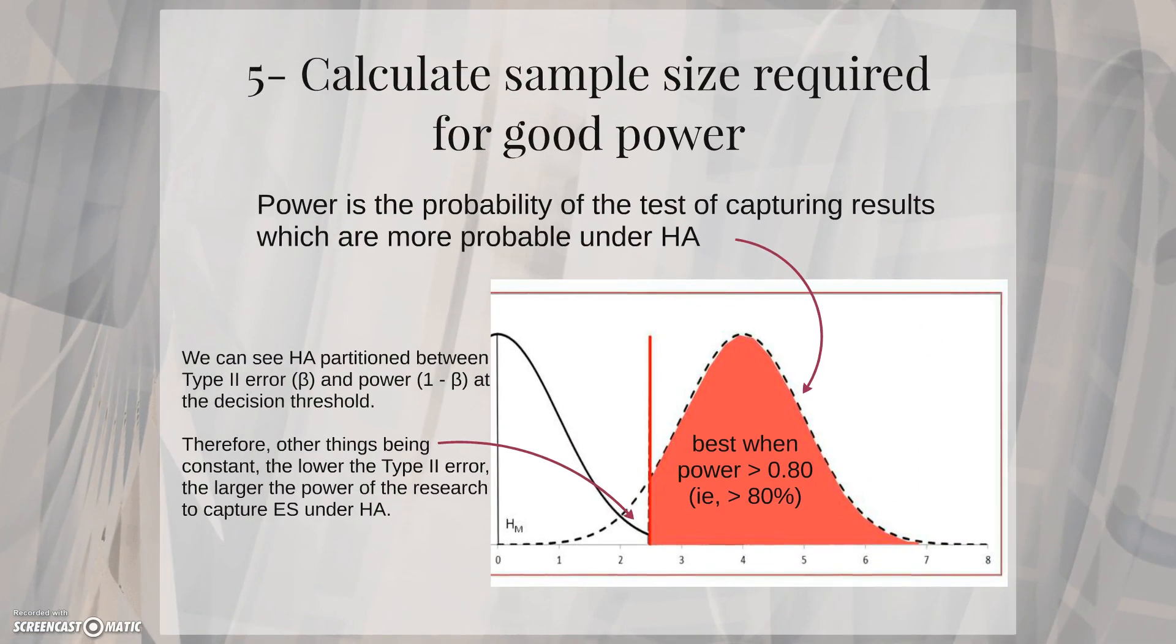The fifth step in the procedure would be to calculate the sample size required for good power. Again, power is the probability of the test of capturing results which are more probable under the alternative hypothesis. So we can see that the alternative hypothesis is partitioned between type 2 error and power at the decision threshold. Therefore, other things being constant, the lower the type 2 error, the larger the power of the researcher to capture effect sizes under alternative hypothesis. For Neyman and Pearson, power is best when it is greater than 80%.